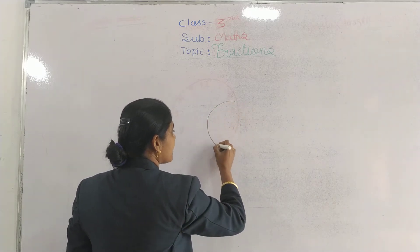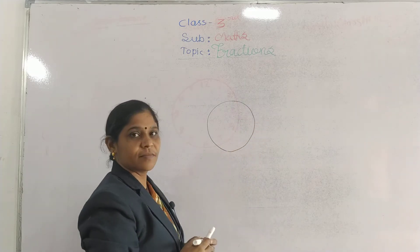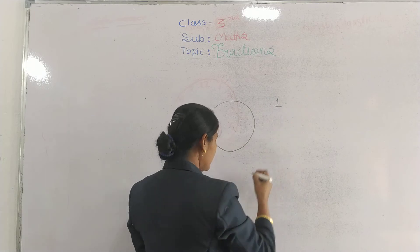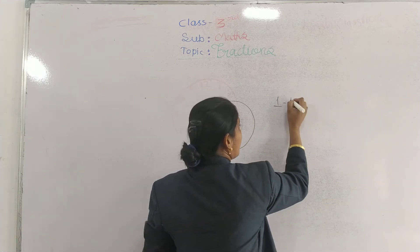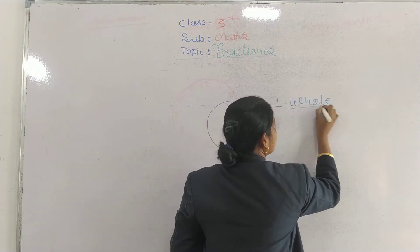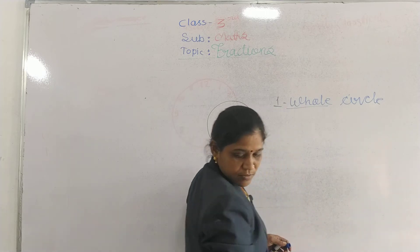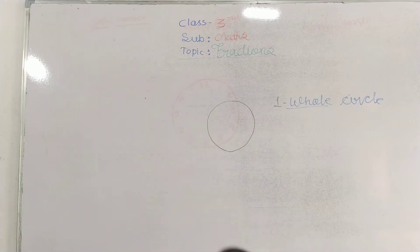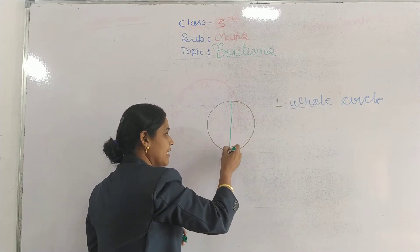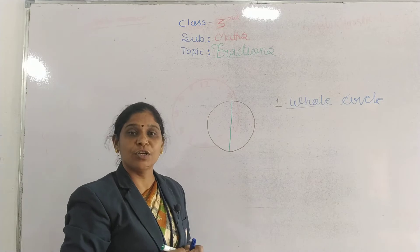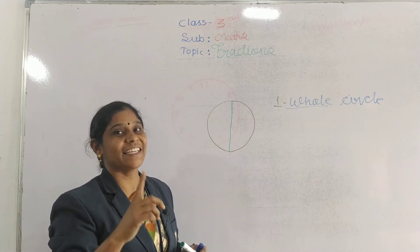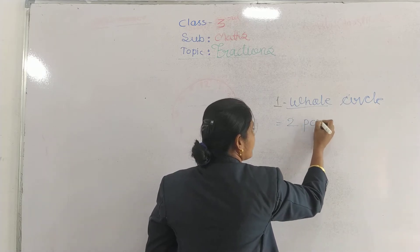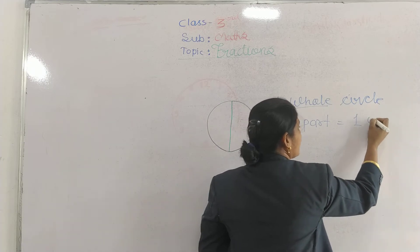अब हमारे पास यहाँ एक circle है। यह क्या है? पूरा one whole circle है। अब इस circle के हम parts करेंगे। हमने इस circle को बीच में से line कर दी। तो कितने parts मिले हमें? Two parts। One whole circle के हमें two parts मिले।